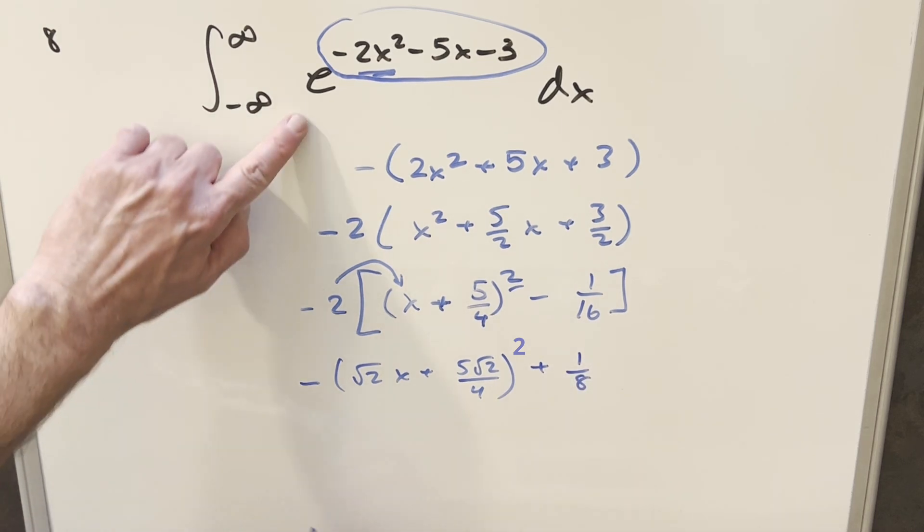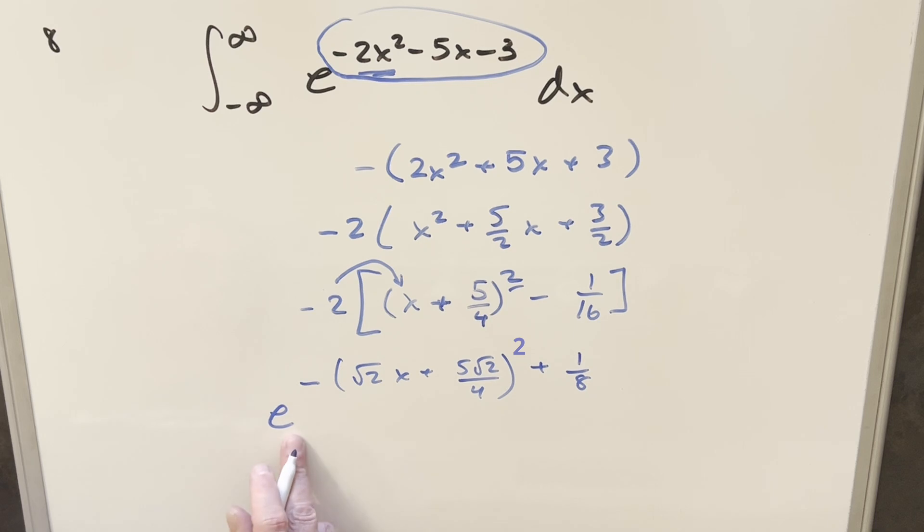And now keep in mind, this thing is all the exponent on our e, so let's just throw that e back in there. But then because we're adding in the exponent, I can separate this out. We can create a separate term here.